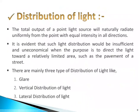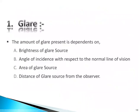Regarding distribution of light: the total output of a point light source will naturally radiate uniformly from the point with equal intensity in all directions. Such light distribution will be insufficient and uneconomical when the purpose is to direct the light towards a relatively limited area such as the pavement of a street. There are mainly three types of distribution of light: glare, vertical distribution of light, and lateral distribution of light. The amount of glare present is dependent on the brightness of the glare source, angle of incidence with respect to the normal line of vision, area of the glare source, and distance of the glare source from the observer.